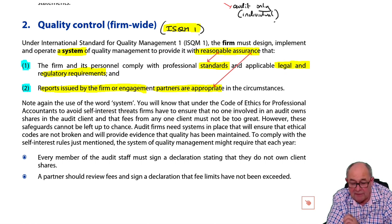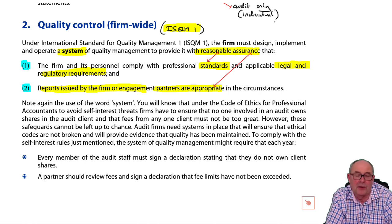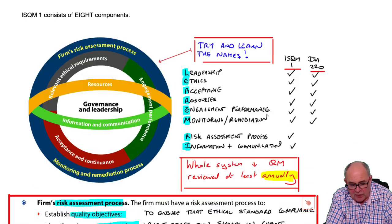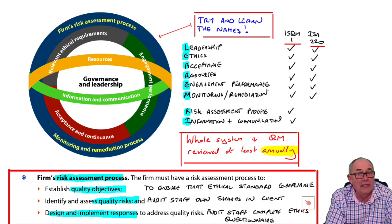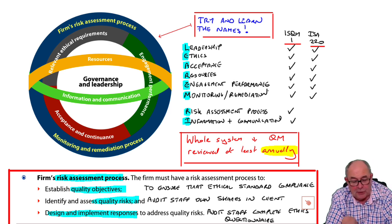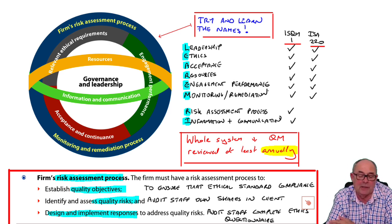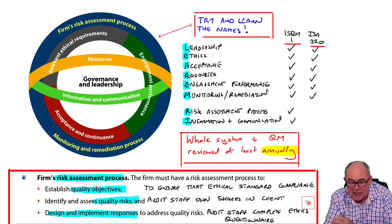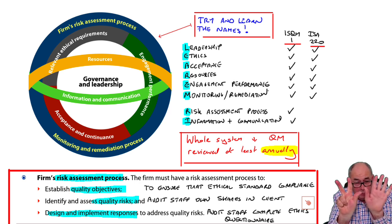So there is the objective of quality management. Within quality management, you have a number of different components. You might look at the diagram in the standard and say it looks like a spaceship — it is in the standard, not something we've made up. ISQM 1 has eight components. Individual audits, as in ISA 220, have six components, but ISQM 1 has eight.